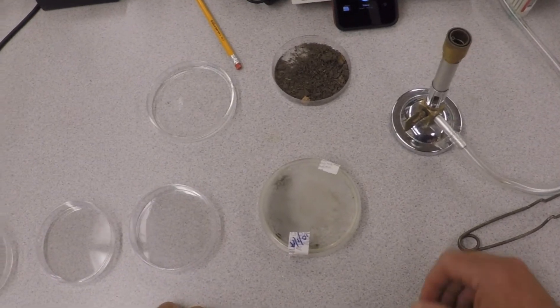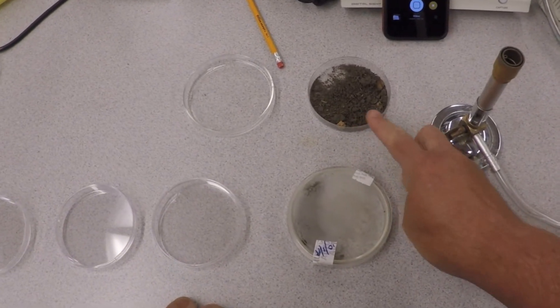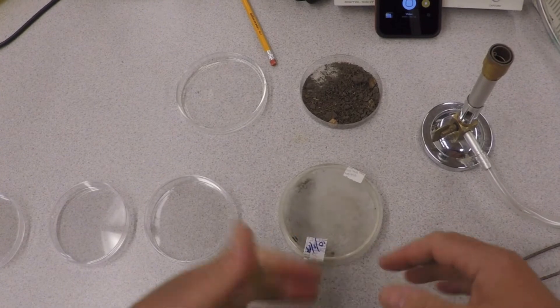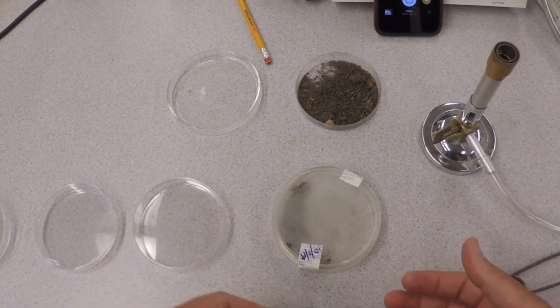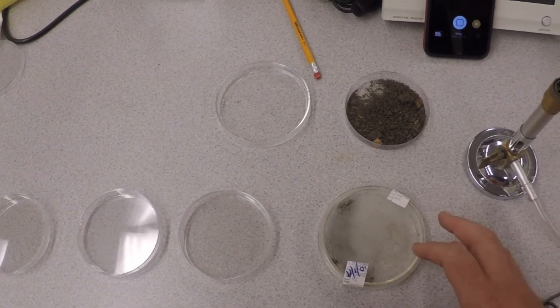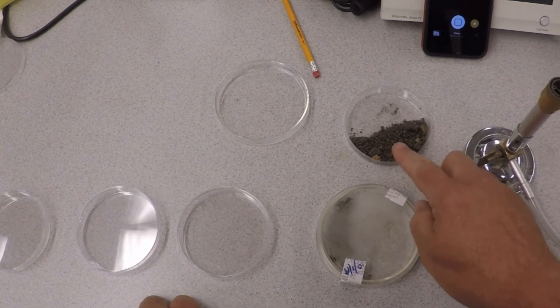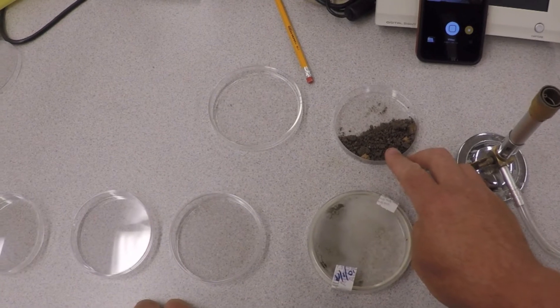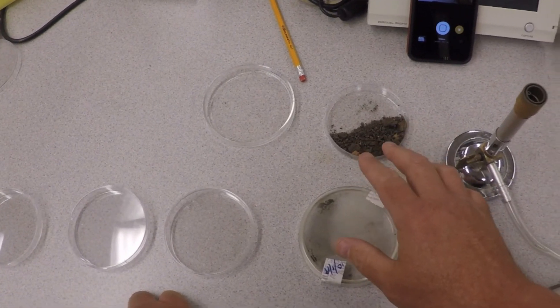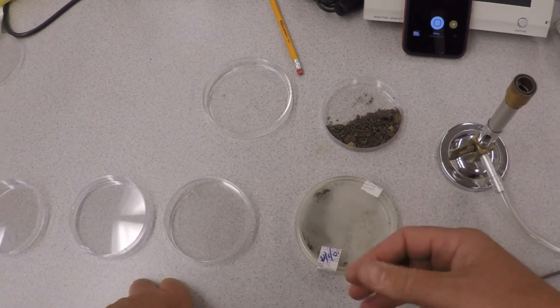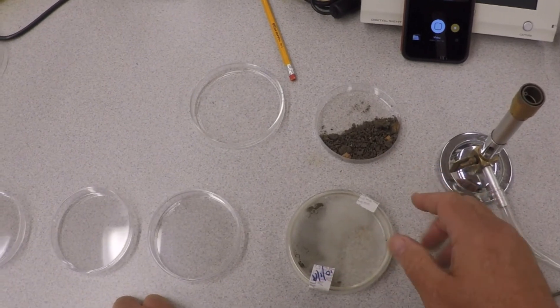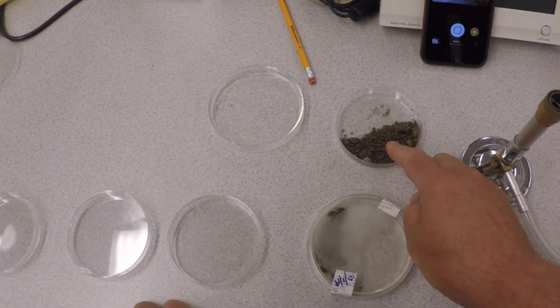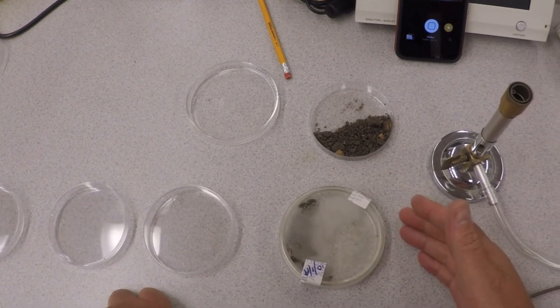Myxobacteria grow in soil. So there's our soil sample. They grow on protein and by eating other bacteria. So what we're going to do is basically hope that there's myxobacteria in this soil from SU. And we're going to bait them. In other words, we're not going to use sugar in the medium. We're not going to use anything specific like that.